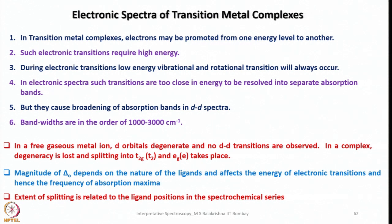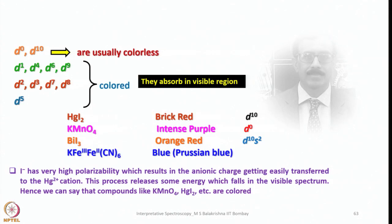The magnitude of ΔO depends on the nature of the ligands and affects the energy of electronic transitions and hence the frequency of absorption maxima. The extent of splitting is related to the ligand position in the spectrochemical series, which is very important in electronic spectroscopy. All d-configurations are classified into four categories: d0 and d10 complexes are usually colorless — not always — and you cannot anticipate d-d transitions for them.